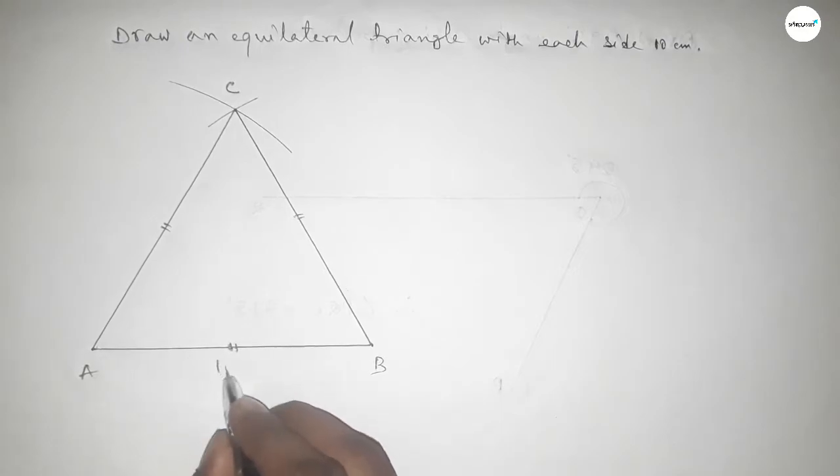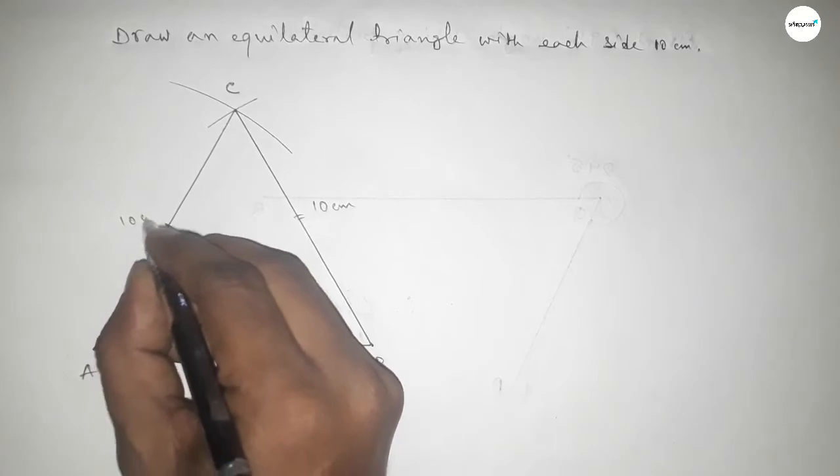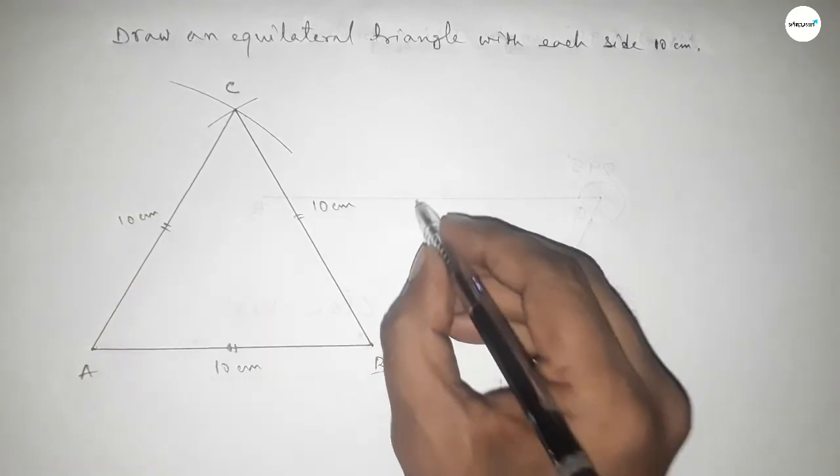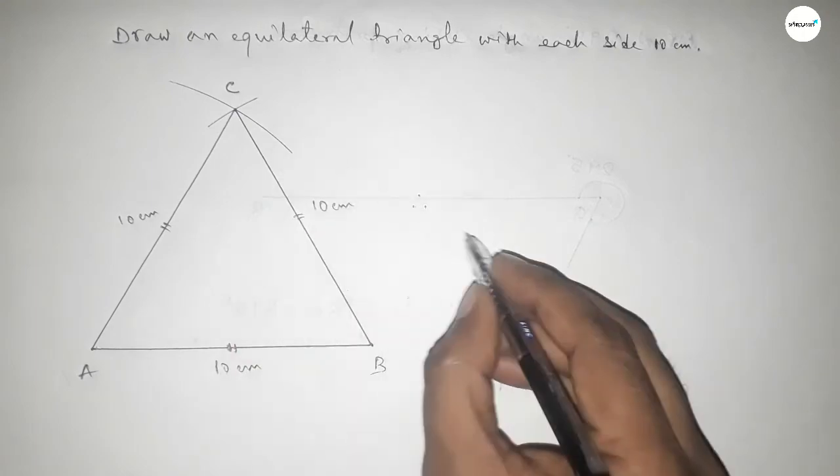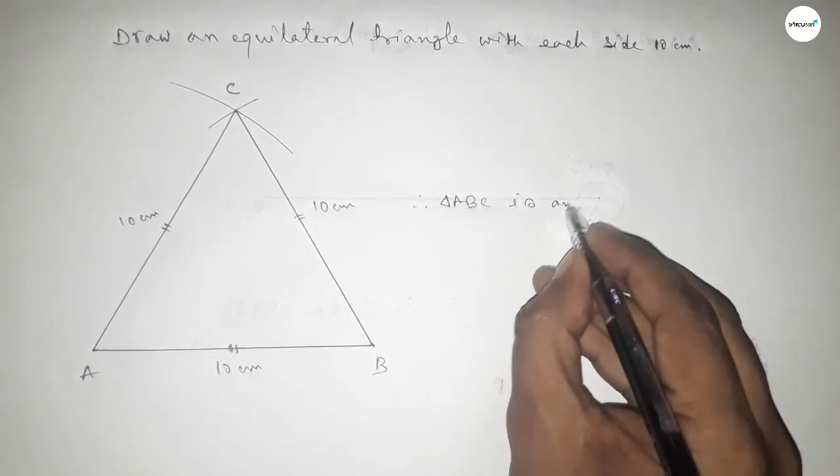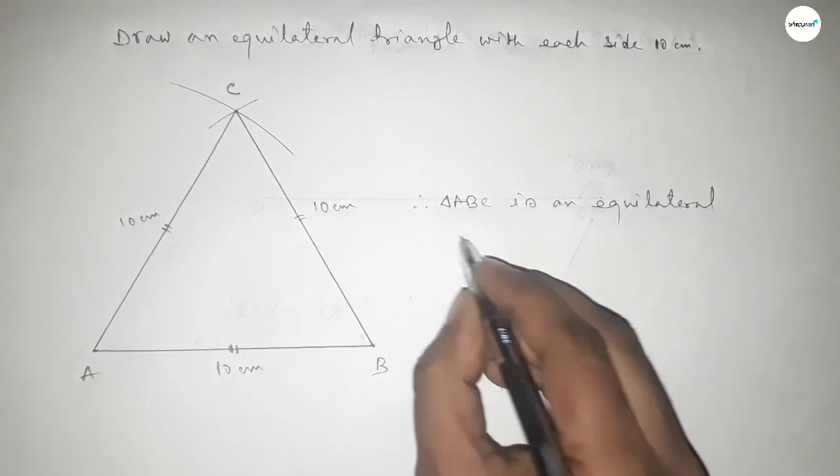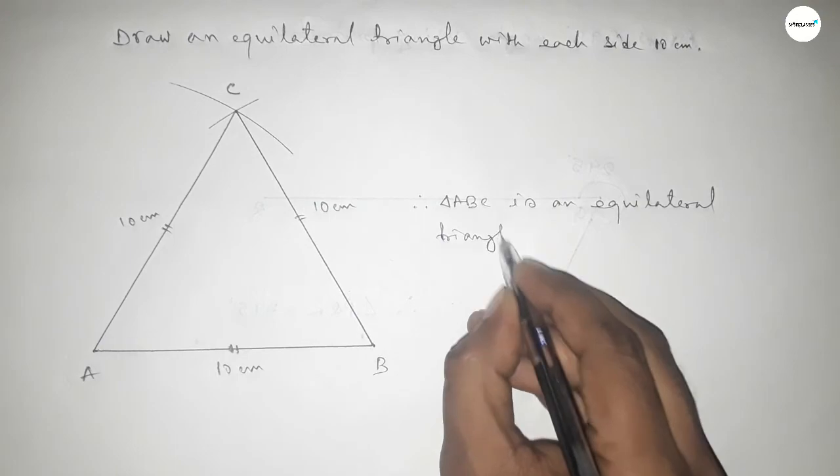So this is 10 centimeter, and this side 10 centimeter, and this side also 10 centimeter. So therefore, triangle ABC, so triangle ABC is an equilateral triangle with each side 10 centimeter.